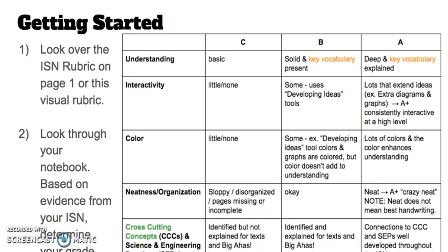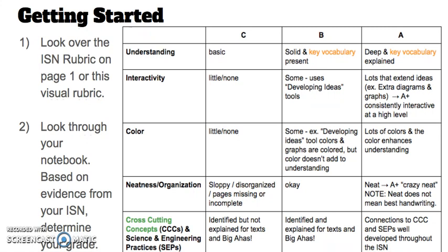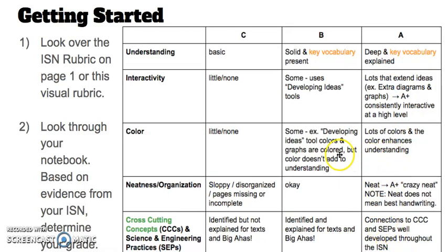Here is a handy visual of the rubric we're going to be providing you so that you can see you have a depth of understanding, not just that you're consistently in one area. A lot of people just say 'I use color, I use color,' but we want to also see interactivity, understanding, and neatness. You want to see all of these pieces, not just arguing from one particular strand.